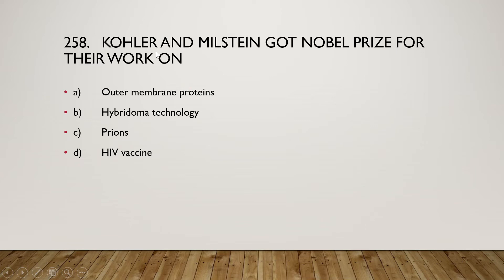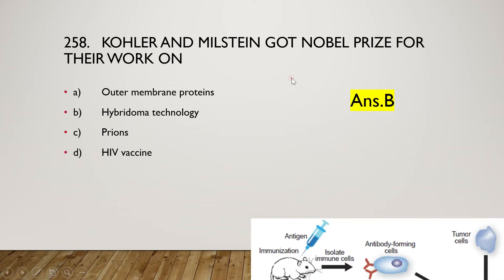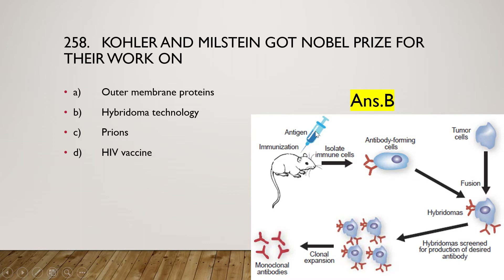Köhler and Milstein got the Nobel Prize for their work on hybridoma technology. In this technology, an antigen is injected into a mouse, which becomes immunized. Immune cells are then isolated from the mouse and fused with tumor cells to produce hybridoma cells. These hybridoma cells can continuously produce the same type of antibody, called monoclonal antibodies.